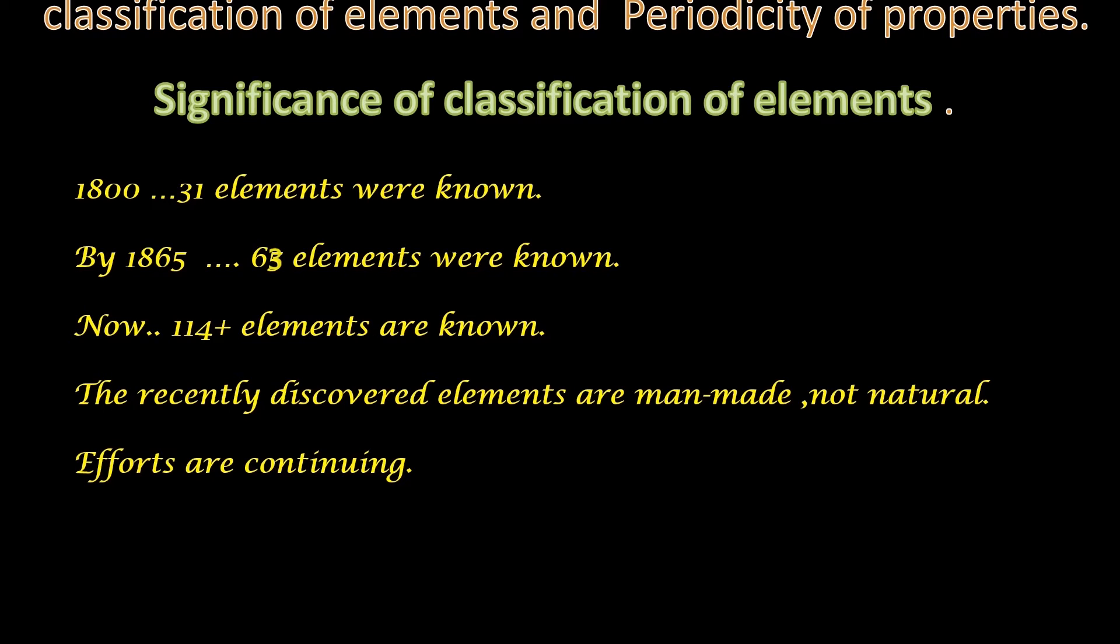As back as 1800s itself, when new and new elements were discovered, scientists understood that studying these elements and their compounds individually will be very difficult. So they thought of finding out some method by which these elements can be grouped based on their similarities, so that the study of these elements will be easier.